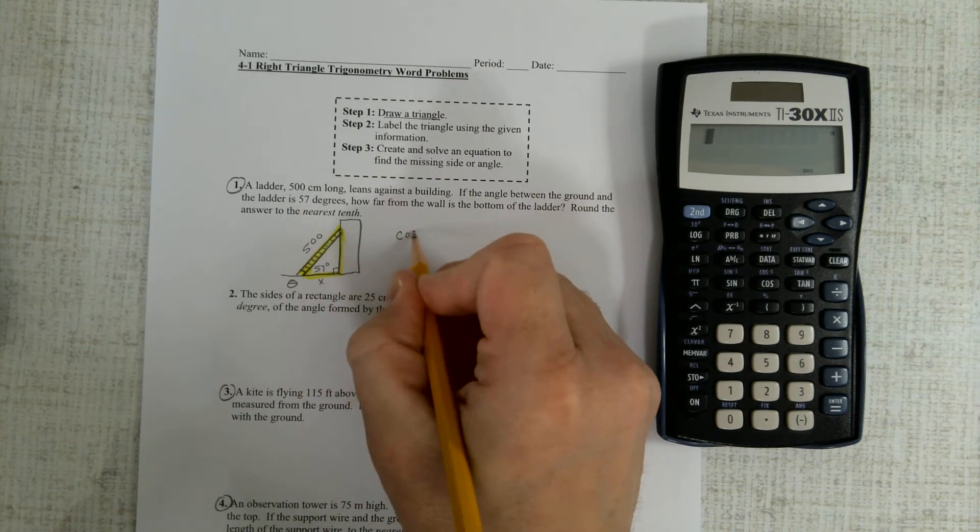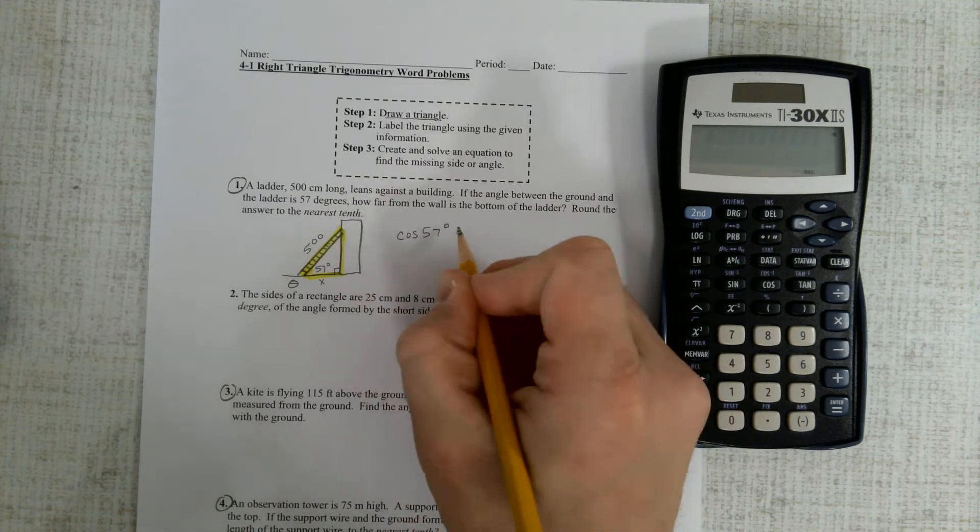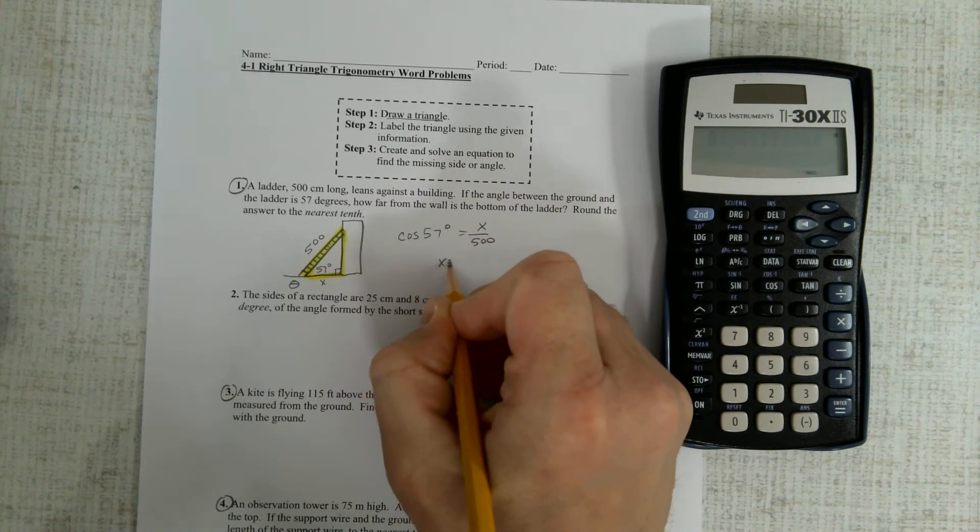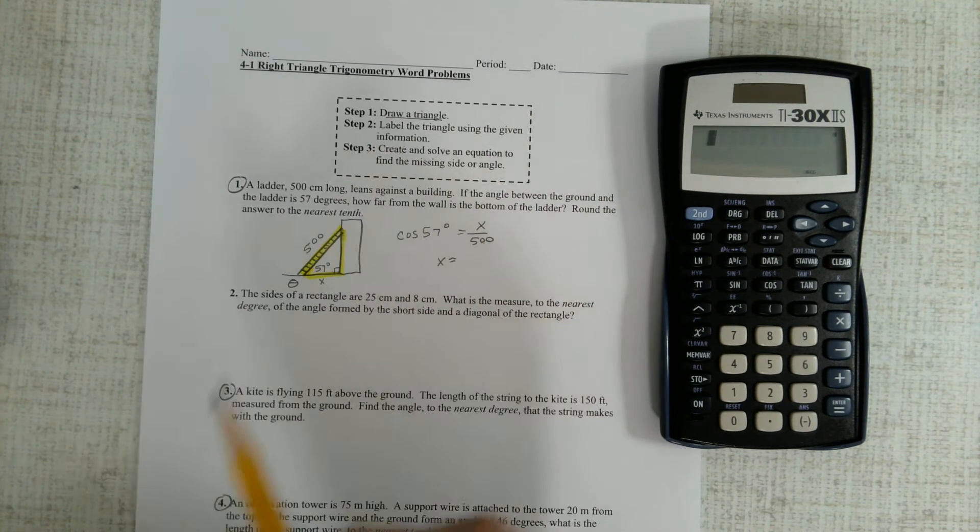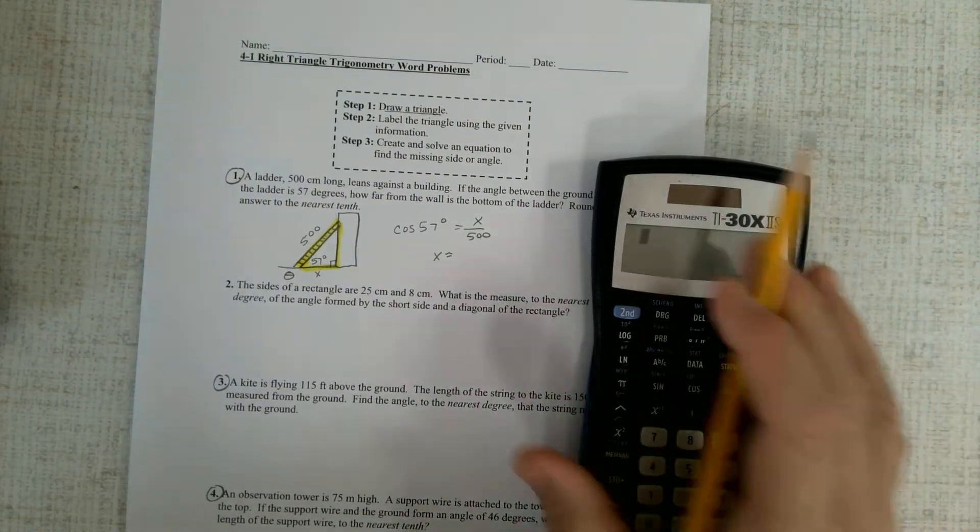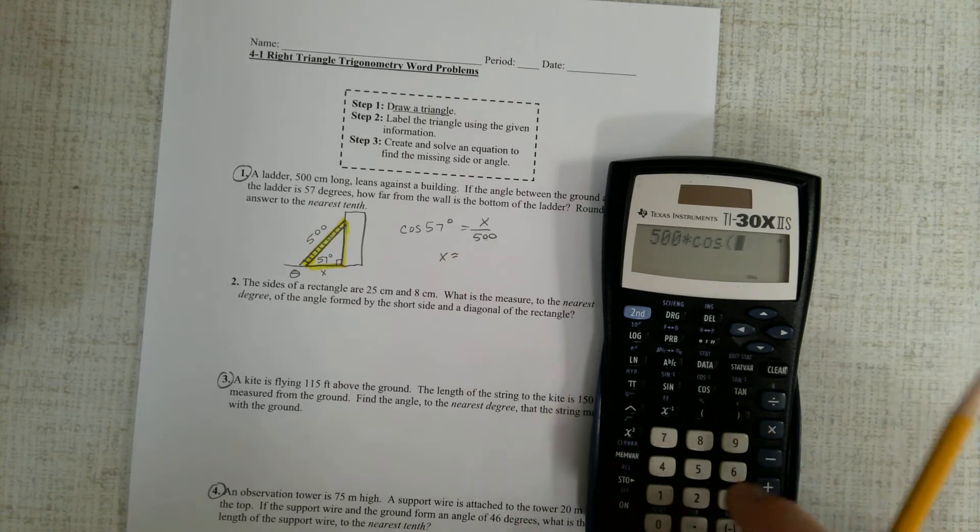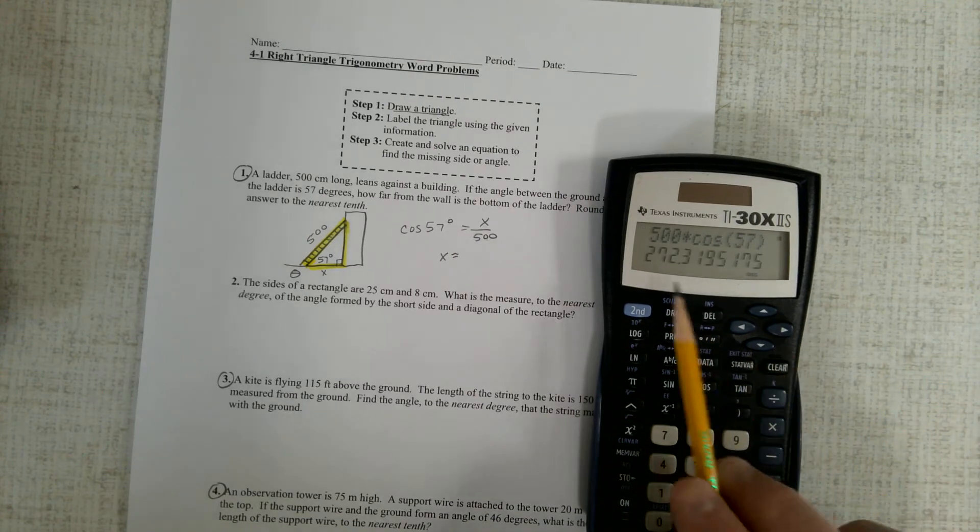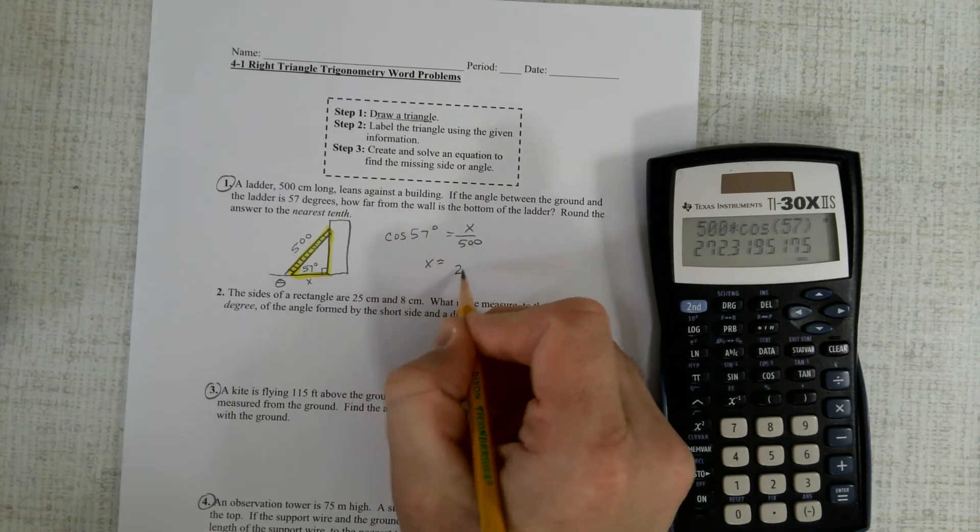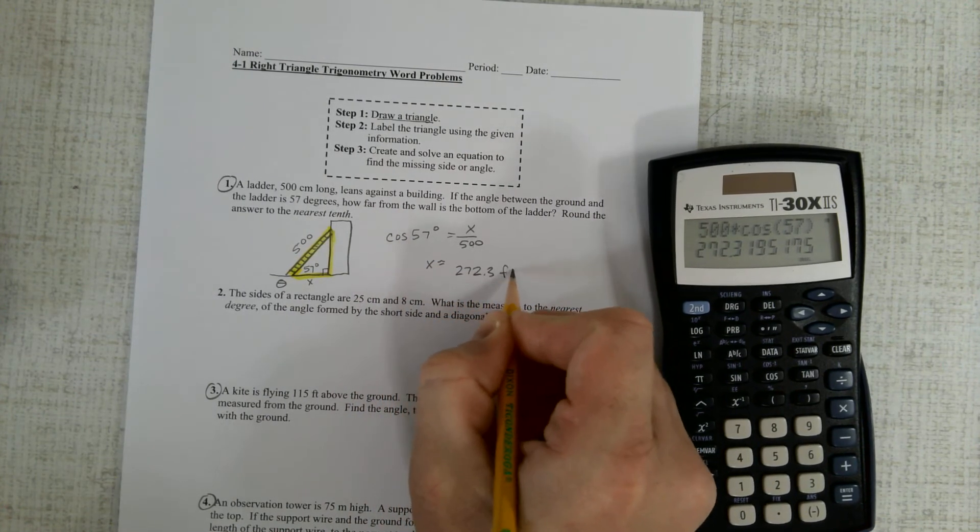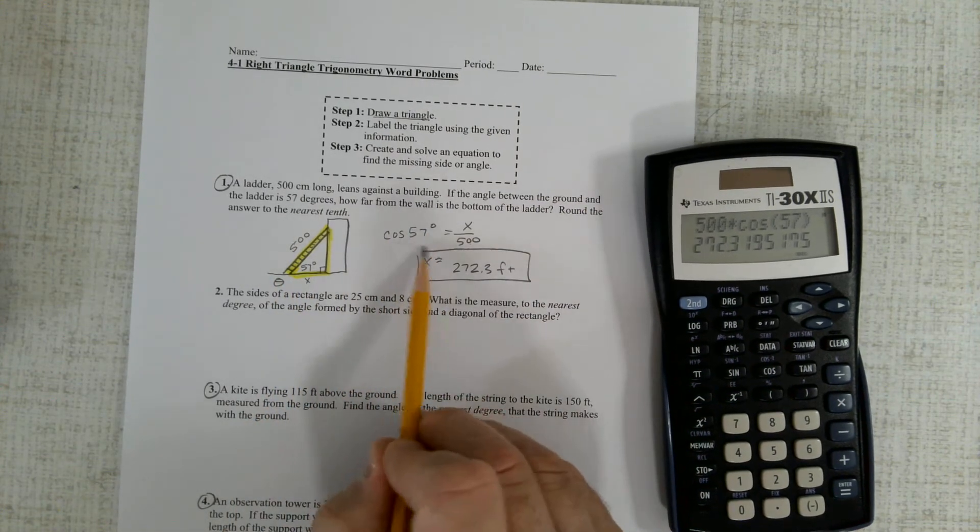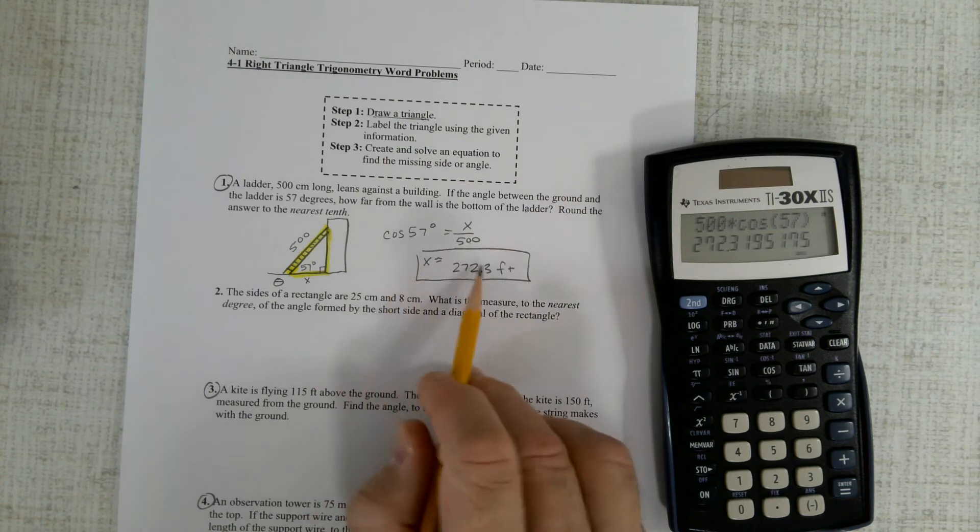Well, that's cosine, so the cosine of 57 degrees is the adjacent over 500. You can get your answer by multiplying this to both sides, and you want to make sure your calculator is in degree mode. So it's 500 times cosine of 57 degrees, and we have 272. What's it say to round to the nearest tenth? So we have 272.3 feet. But the key is, draw a triangle, write a trig equation, and then solve it.